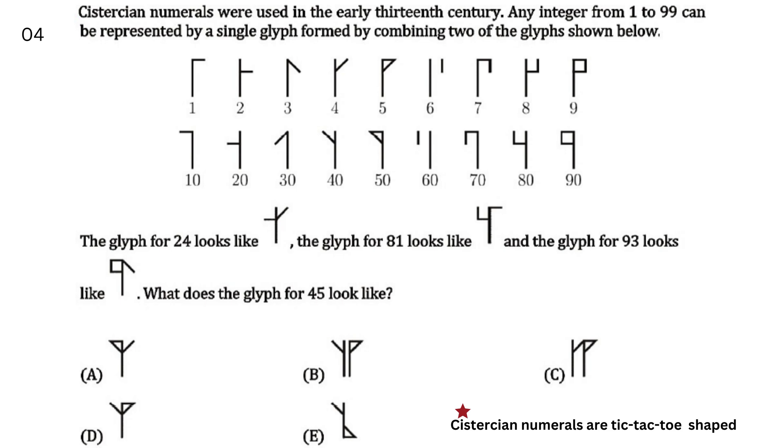Cistercian numerals were used in the early 13th century. Any integer from 1 to 99 can be represented by a single glyph formed by combining two of the glyphs shown below. The glyph for 24 looks like this. Glyph for 81 looks like this and the glyph for 93 looks like this. What does the glyph for 45 look like?